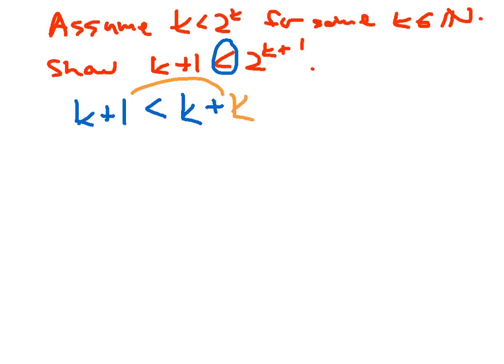If you remember, every time I see a k, I can replace it with a 2 to the k and make it an inequality. So I'm going to use the inductive hypothesis right now, and maybe I'll put this in green to indicate that, that by the inductive hypothesis, this k right here is less than 2 to the k.